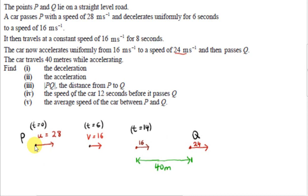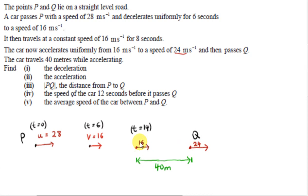The car was accelerating when it went from P to the end of the first leg, but the acceleration was negative — a negative acceleration is called a deceleration. It must be the last leg of the journey that the 40-meter distance refers to. We don't have the time taken for the car to go from the end of the constant-speed phase to Q, so we need the distance. Just knowing the initial and final velocities tells us nothing about the last leg of the journey on its own.